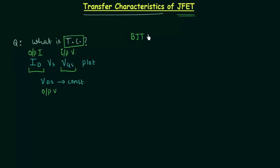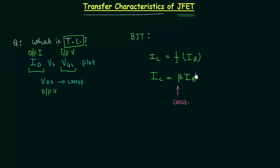In case of bipolar junction transistors, the output current — the collector current — is a function of the input current IB. More precisely, IC equals beta times IB, where beta is the amplification factor and it is constant. IB is the control variable. There is a linear relationship between IC and IB because beta is constant.